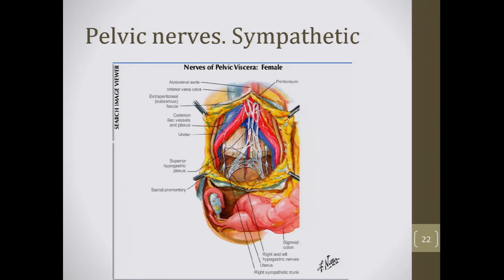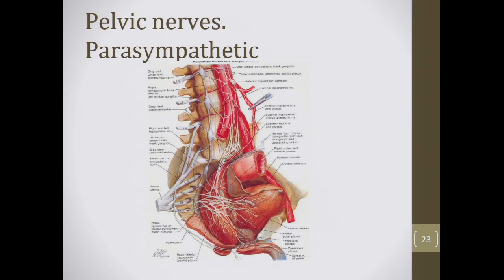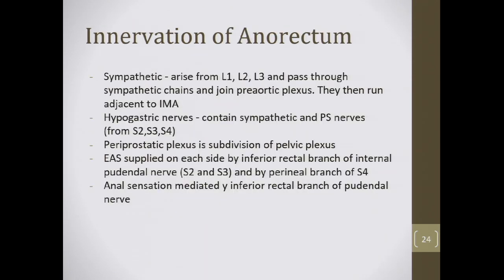For innervation of the anorectum: sympathetic nerves arise from L1, L2, L3, pass through the sympathetic chains, and join the pre-aortic plexus, running adjacent to the inferior mesenteric artery (IMA). The hypogastric nerves contain sympathetic and parasympathetic fibers from S2, S3, S4. The periprostatic plexus is a subdivision of the pelvic plexus and an important structure to be aware of during pelvic dissection.